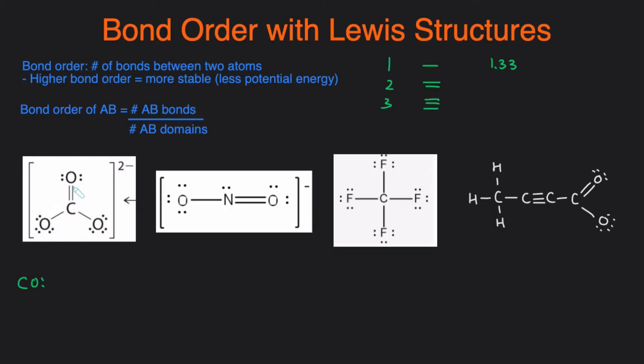The important thing to realize about resonance is that the real structure is the average of all the structures. That means in reality, each of these bonds right here, they're neither single bonds nor double bonds, but they're more of the average of the three possible resonance structures. Knowing that, we can calculate the bond order for each of these CO bonds.